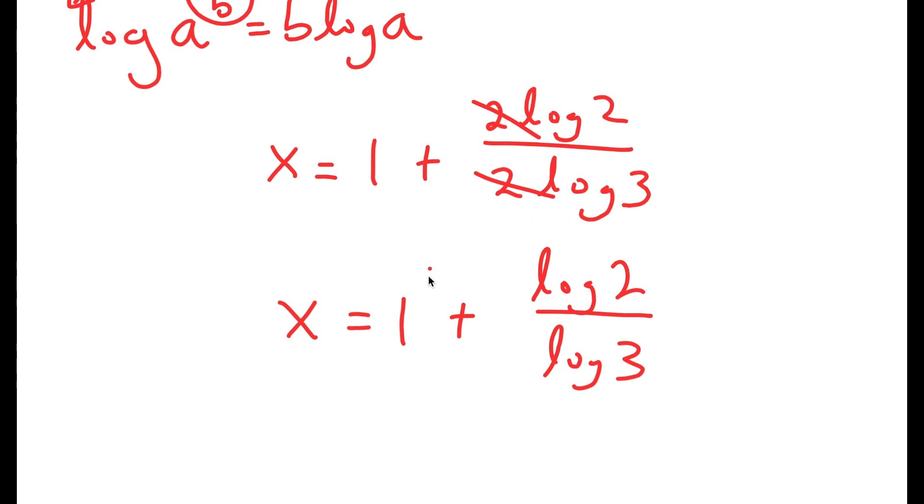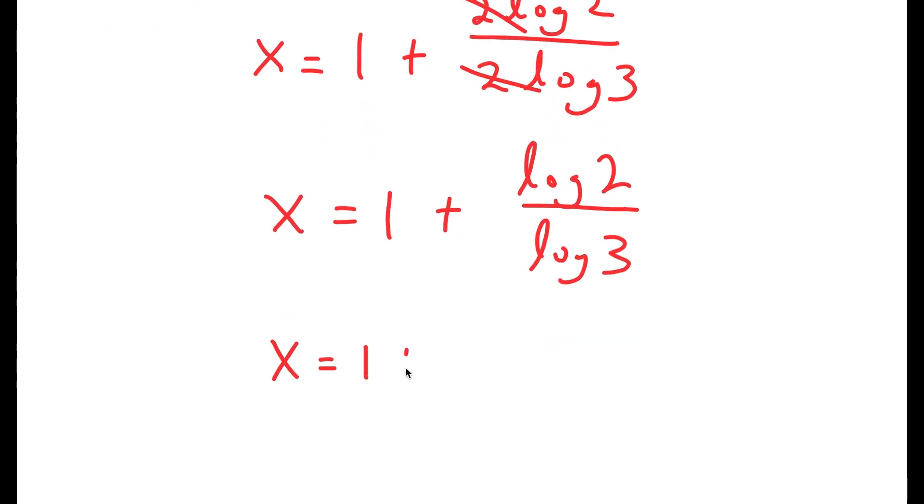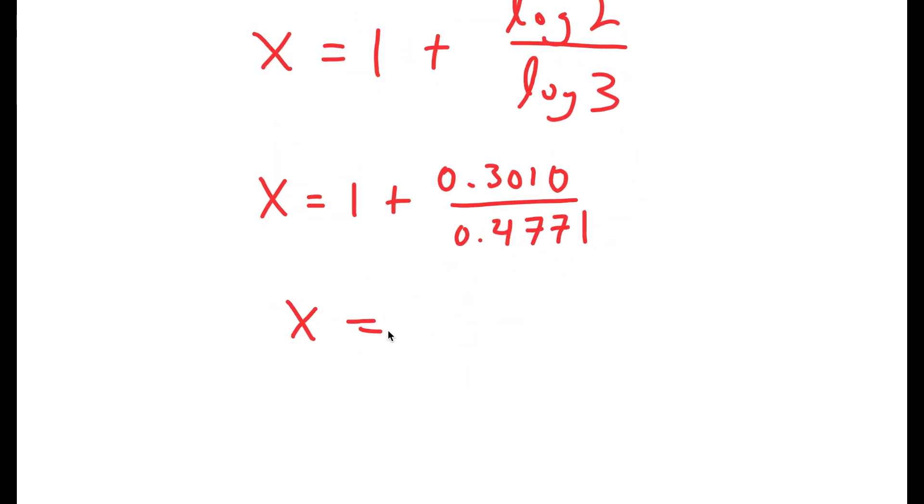Now, log 2 is equal to 0.3010, and log 3 is equal to 0.4771. So if I divide these two, I get x equals 1 plus 0.6309, meaning x is equal to 1.6309. So this is my answer.